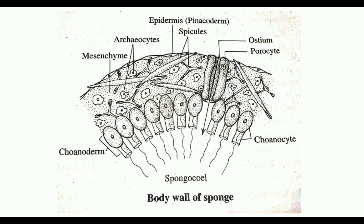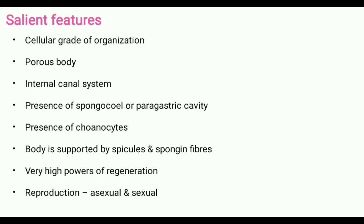Spongin is a silk-like elastic substance. Spicules are small bristles formed of silica or calcium carbonate. Sponges have very high powers of regeneration — damaged or lost parts can be regenerated. Reproduction occurs both sexually and asexually. Asexual reproduction is by fragmentation and budding. Sponges are sessile aquatic organisms, and most of them are marine.